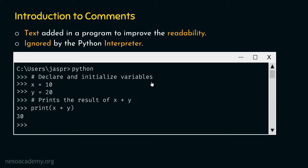If some other programmer sees my code, they will understand what I have written. I declared these two variables and initialized them as well. I have also written one more comment — since every comment is preceded by a hash symbol, I typed 'print the result of x plus y' because the next line prints x plus y. The print function outputs x plus y, which gives us 30. So this comment is also improving the readability of the program.